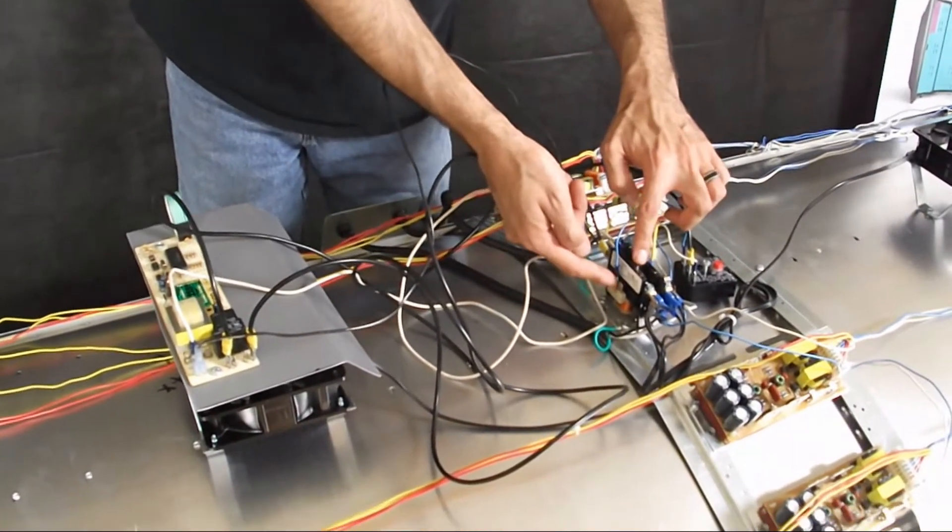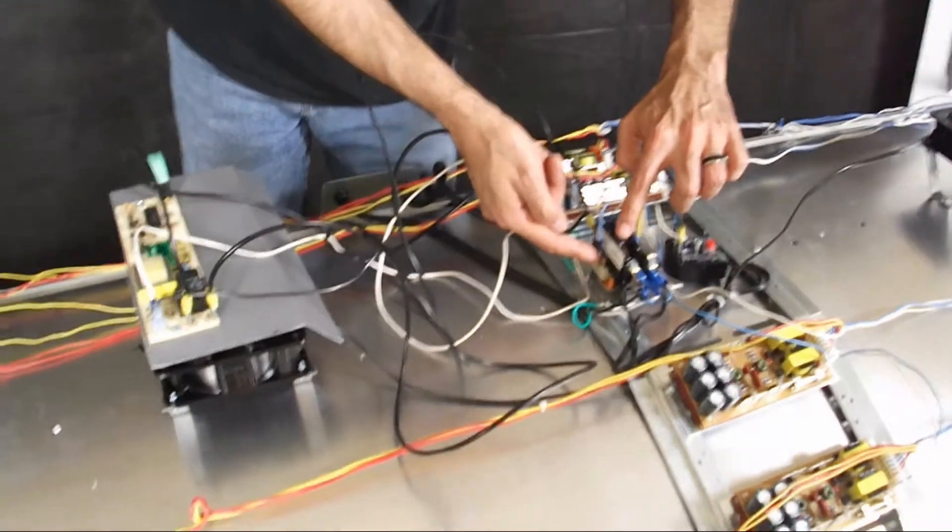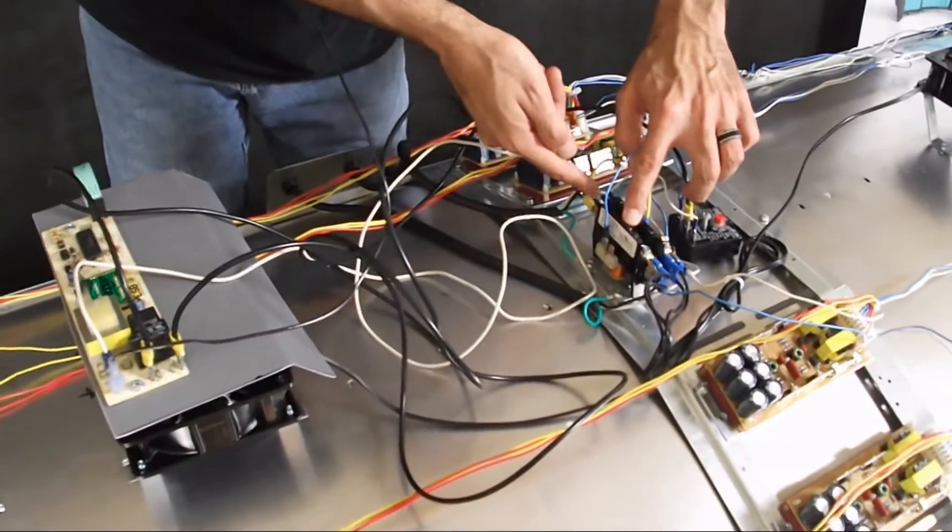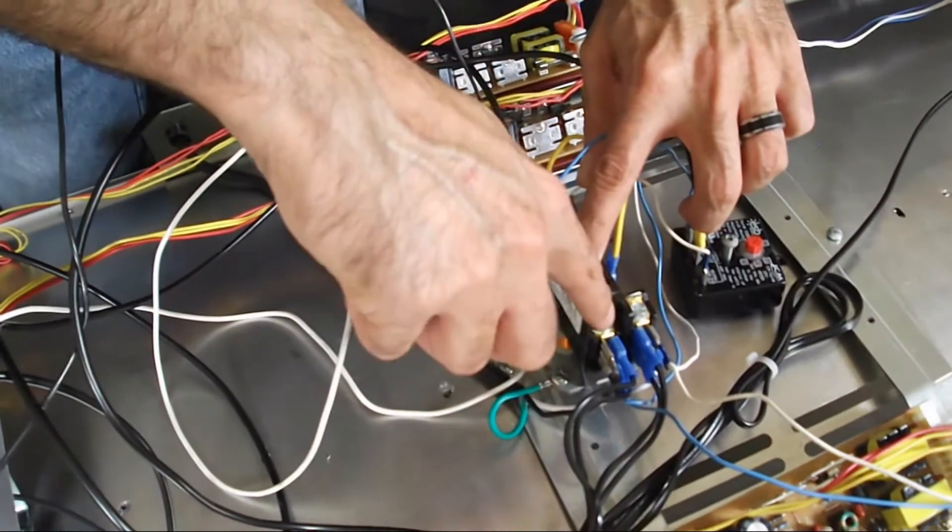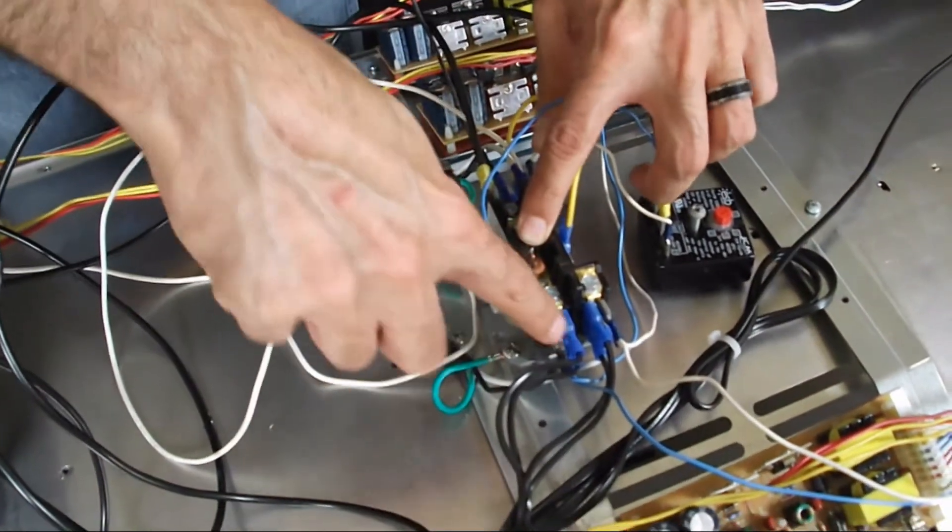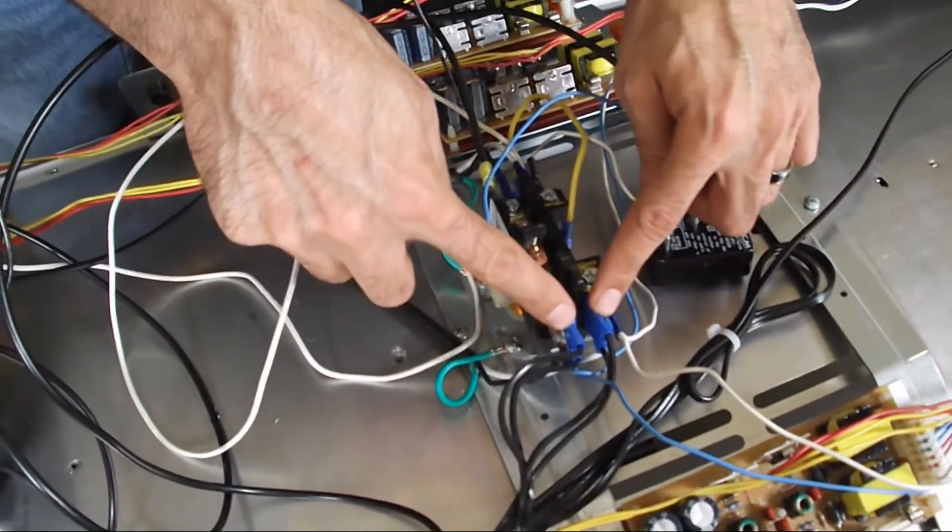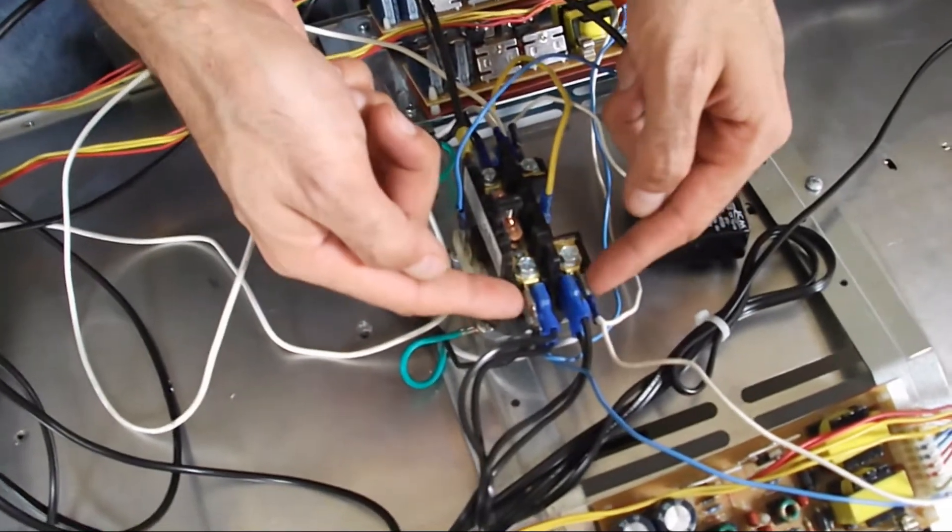When the contactor closes, it actually closes this contact right there and allows the hots to flow through the tanning bed. And when it does, when it flows through, here on the secondary side of your contactor, it is energized.